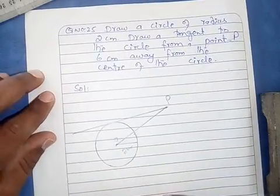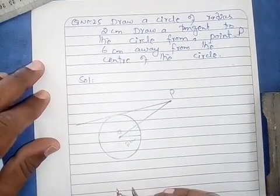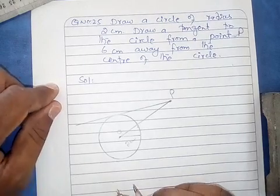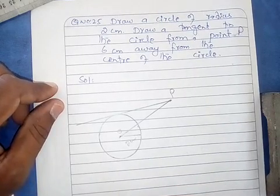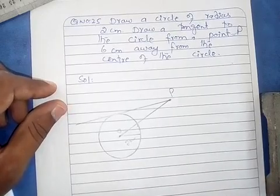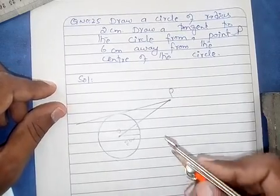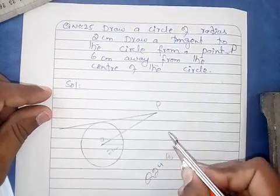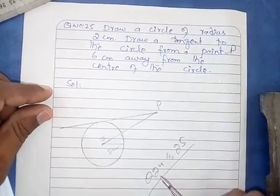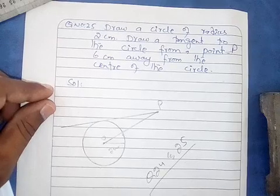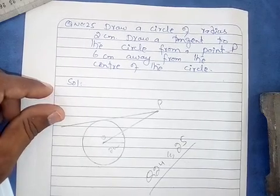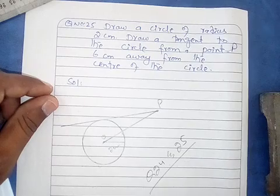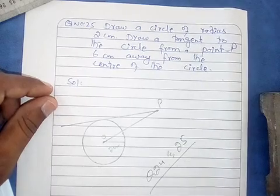یہ tangent line آپ کے پاس circle کی ایک point کو touch کرتی ہے۔ یہ question یہی تک تھا۔ آپ نے بھی ایسے ہی کرنا ہے — question number 24 اور question number 25 آپ کو homework میں ہیں exercise 19 سے۔ یہ دونوں questions اپنی fair copy پر بنا کر اپنے WhatsApp group میں share کریں۔ Take care.